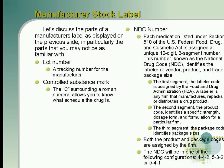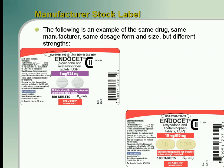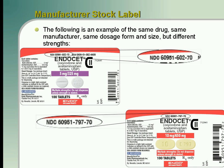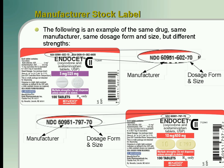Both the product and package codes are assigned by the firm. The NDC will be in one of the following configurations: 4-4-2, 5-3-2, or 5-4-1. Here is an example of the same drug, same manufacturer, same dosage form and size, but different strengths. Looking at the NDC numbers, we can see that they both have the same manufacturer code — 60951 — and both end in the same two-digit numbers for dosage form and size — 70. But the drug strength is different: the first one is 5 mg of oxycodone and 325 mg of acetaminophen, whereas the second one is 10 mg of oxycodone and 650 mg of acetaminophen.